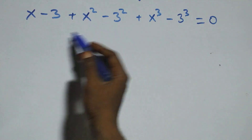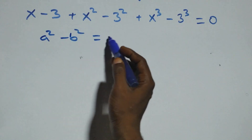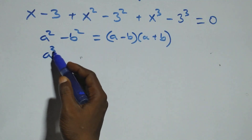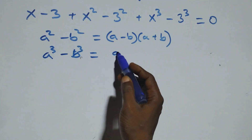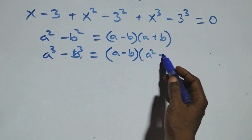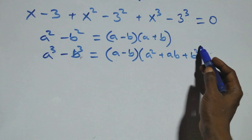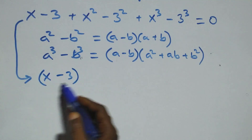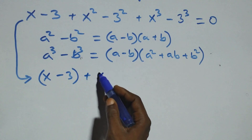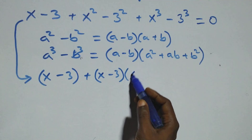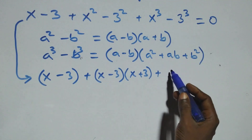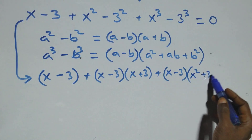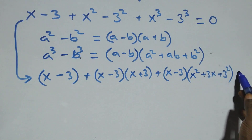This follows what we have: a squared minus b squared can be expressed as (a minus b)(a plus b). And also here we have a raised to power 3 minus b raised to power 3, which can be expressed as (a minus b)(a squared plus ab plus b squared). So this equation becomes x minus 3, then plus applying these identities: (x minus 3)(x plus 3), then plus (x minus 3)(x squared plus 3x plus 3 squared), plus bracket, equals to 0 here.